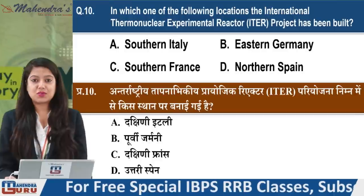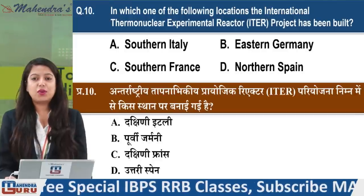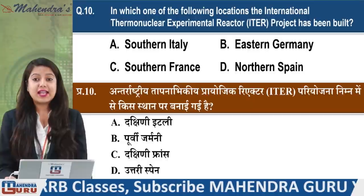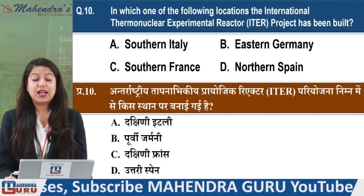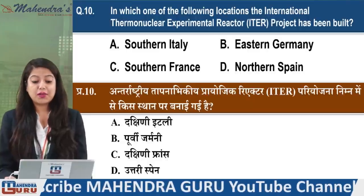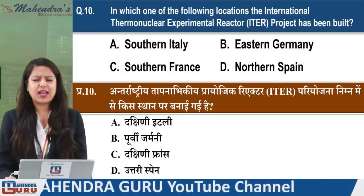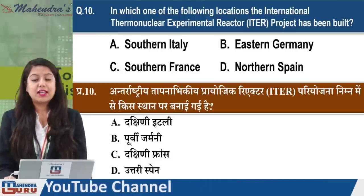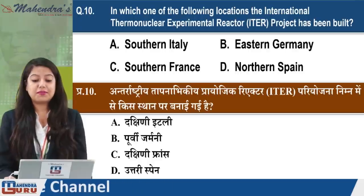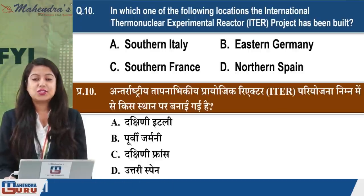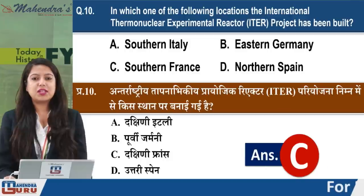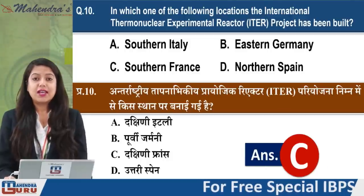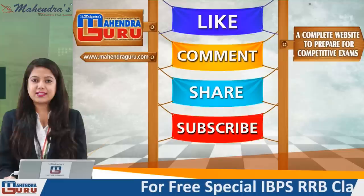Last question: In which one of the following locations has the International Thermonuclear Experimental Reactor (ITER) project been built? Options: Southern Italy, Eastern Germany, Southern France, or Northern Spain. The right answer is option C - Southern France.